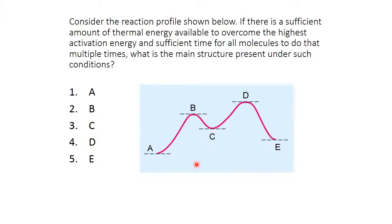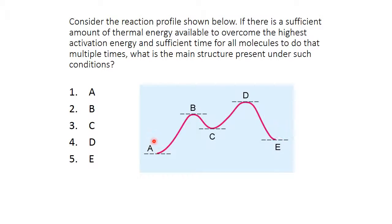Consider this reaction profile. If there is enough heat for the largest activation energy to be overcome, and there's time for all molecules to equilibrate, what would be the main structure present at equilibrium? There's enough energy to overcome the first hump, and the fast step would also occur. These are transition states so they never accumulate; the intermediate never accumulates either. The only things that can accumulate are E and A. A is lower energy, so A is what accumulates. With time, the lowest energy compound will form if there's enough energy to undergo both the forward and reverse reactions.